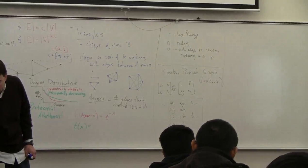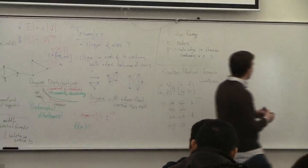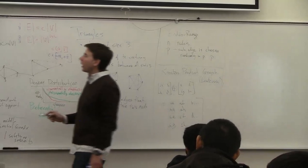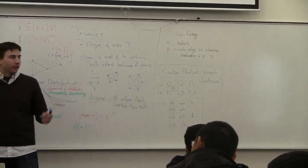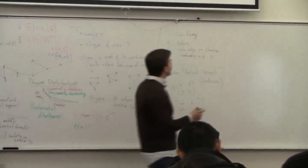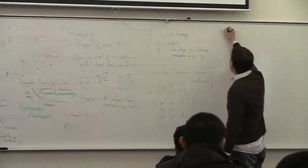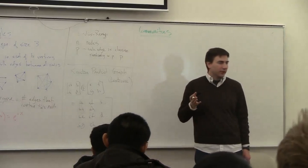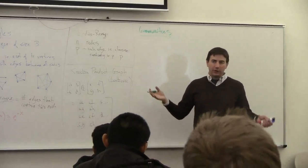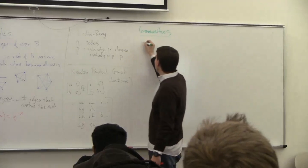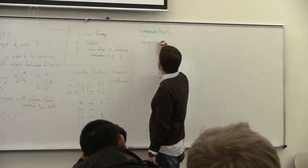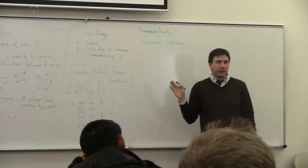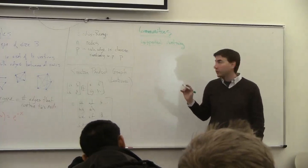The next topic is communities in graphs and the importance of certain elements. One way of finding communities is clustering — we know how to do clustering on graphs using spectral clustering. I'll also talk about a different view used on graphs.